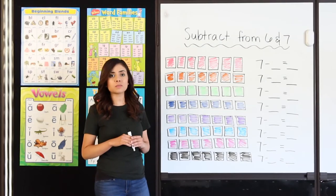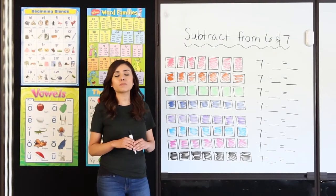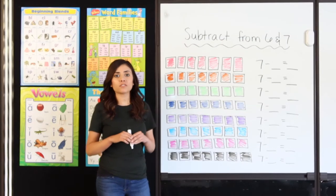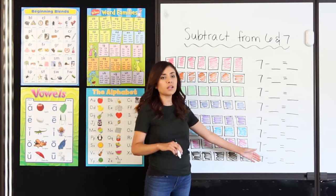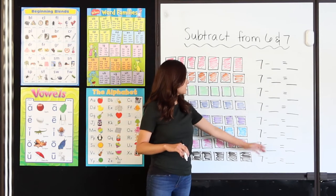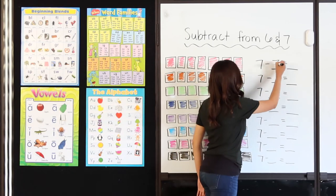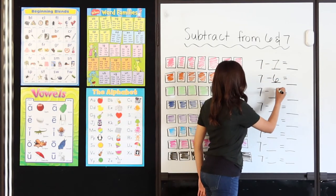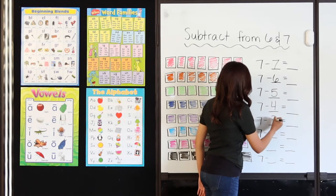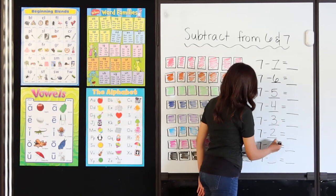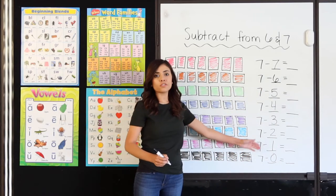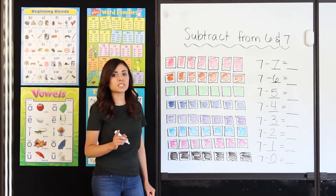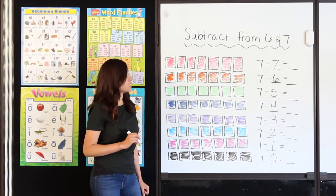So now that we've practiced subtracting from 6, let's practice subtracting from 7. To start, I'm going to count from 7 to 0: 7, 6, 5, 4, 3, 2, 1, 0. Those are the different ways to subtract from 7. Let's get started.